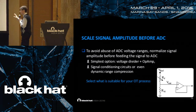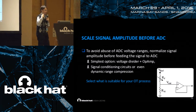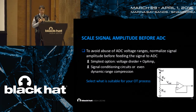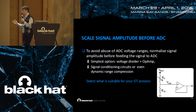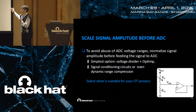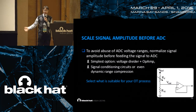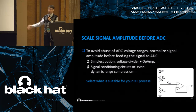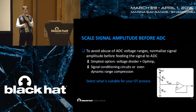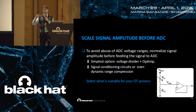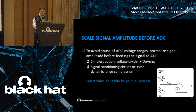To defend against amplitude attacks: to avoid abuse of ADC voltage ranges, normalize signal amplitude before feeding the signal to the ADC. The simplest option is a voltage divider and op-amp. Or you can use what is suitable for your operational technology process, like signal conditioning circuits or dynamic range limiters or something similar.